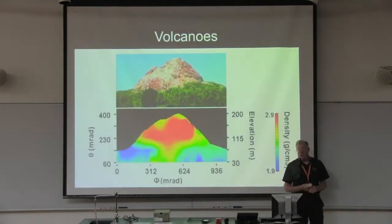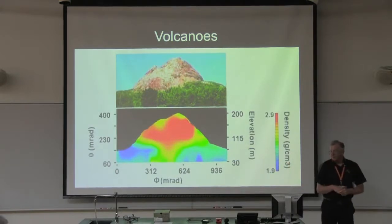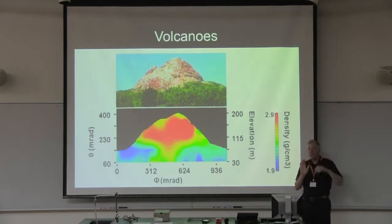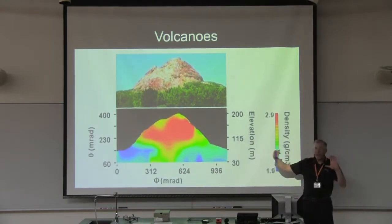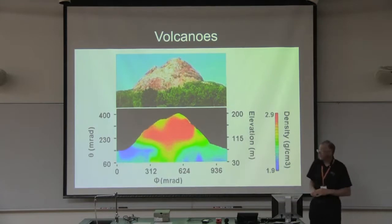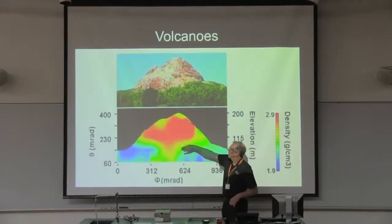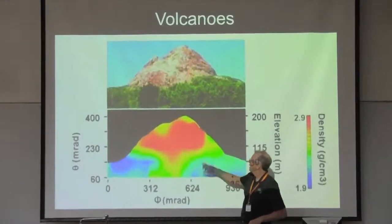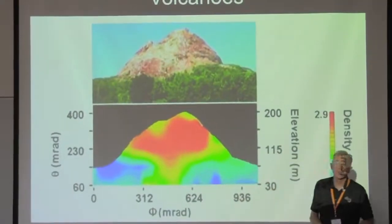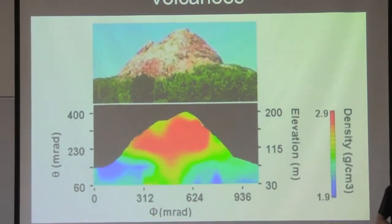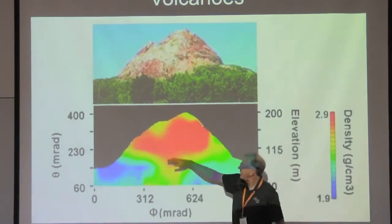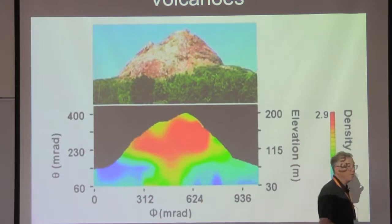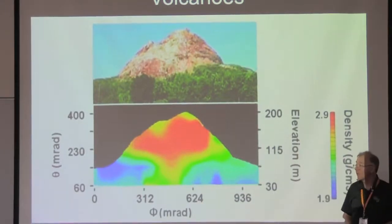Muon detectors can also be aimed at volcanoes at a low angle, letting muons pass through. The resulting muon density plot shows where the most and fewest muons get through, revealing empty chambers inside. By continuously monitoring this, if the empty space decreases as magma moves up, you get advance warning of potential volcanic eruption.